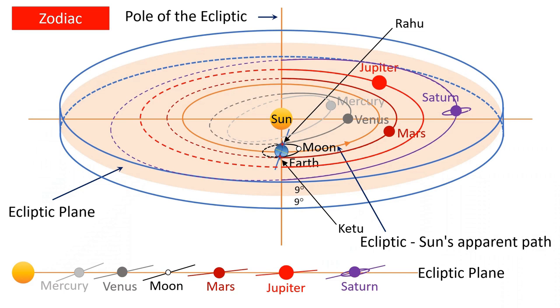By the way, please take a note that the diagram you are seeing and the angles of the orbits of various grahas are not to the scale and are presented here to just convey the point.